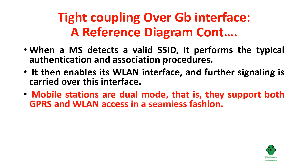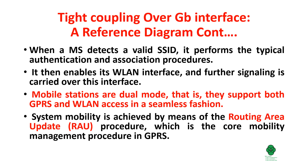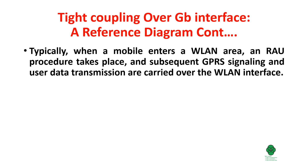Mobile stations are dual mode — they support both GPRS and WLAN access in a seamless fashion. System mobility is achieved by means of the Routing Area Update (RAU) procedure, which is the core mobility management procedure in GPRS. Typically, when a mobile enters the WLAN area, an RAU procedure takes place and subsequent GPRS signaling and user data transmission are carried over the WLAN interface.